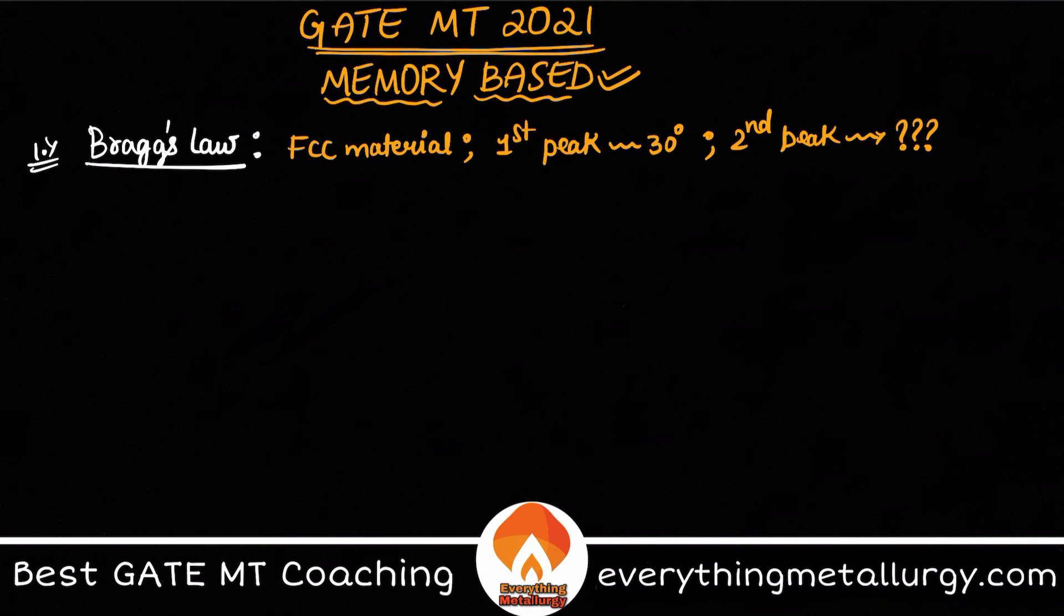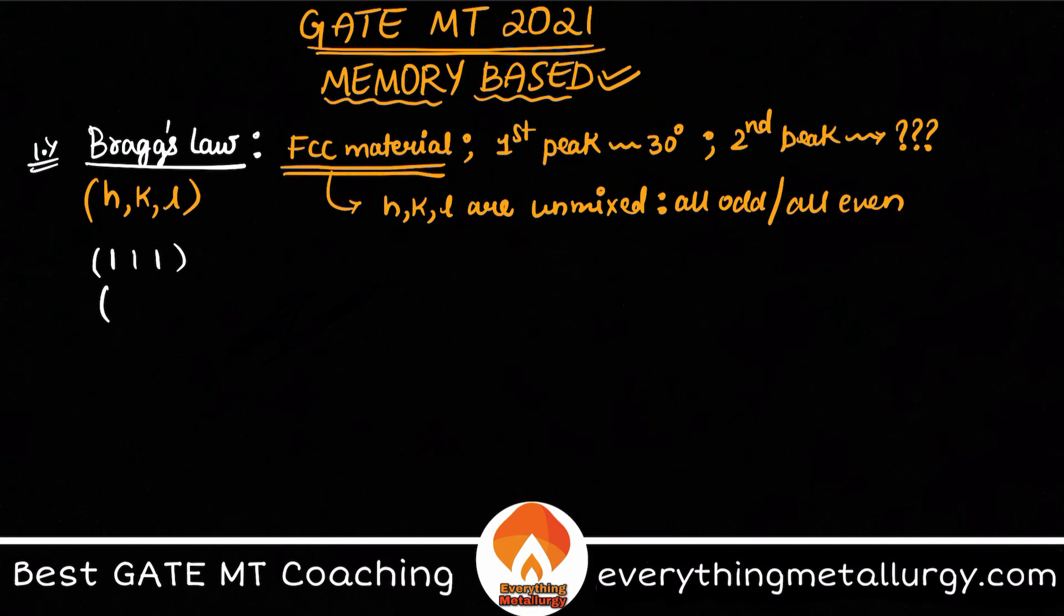So how to go about it? You have to be very clear when you see FCC material. In FCC what is the condition that the Bragg's law is satisfied? When H, K and L are unmixed - that means all are odd or all are even. From here you can get the values of H, K and L, the different planes. So from here basically we have 1,1,1 as the first plane and the second one is 2,0,0. So basically you need to calculate theta for this plane.